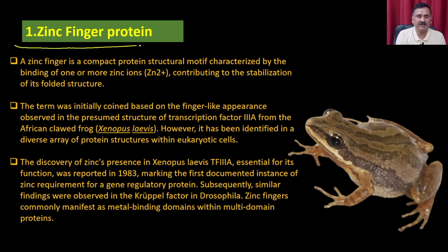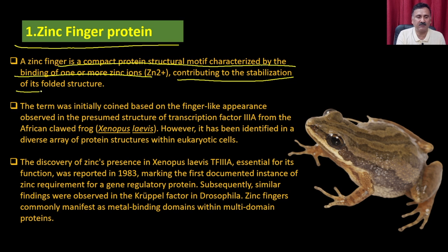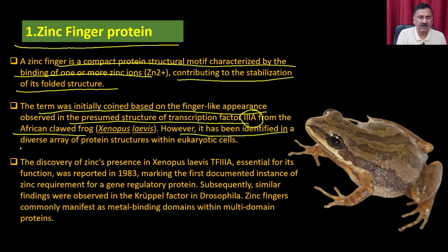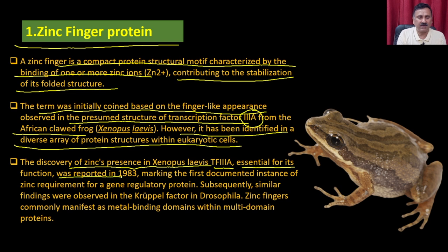Zinc finger proteins: a zinc finger is a compact structural protein motif characterized by the binding of one or more zinc ions, contributing to the stabilization of its folded structure. The term 'zinc finger' was first coined based on finger-like appearances observed in the structure of transcription factor 3A from the African frog Xenopus. The discovery of zinc in the Xenopus transcription factor 3A was reported in 1983, marking the first documented instance of zinc requirement for a zinc-regulated protein.